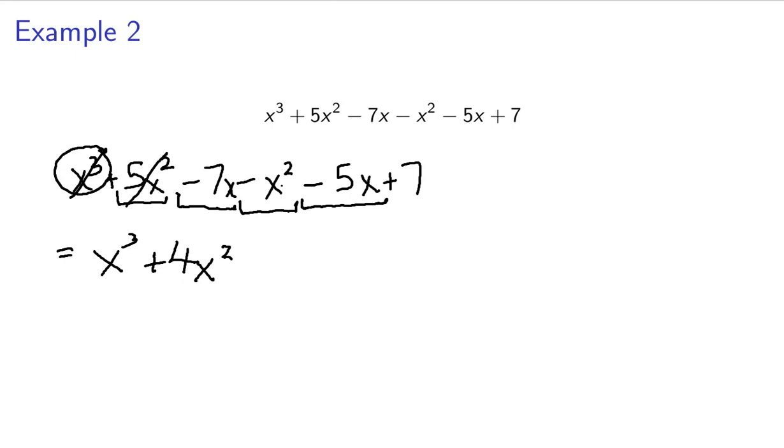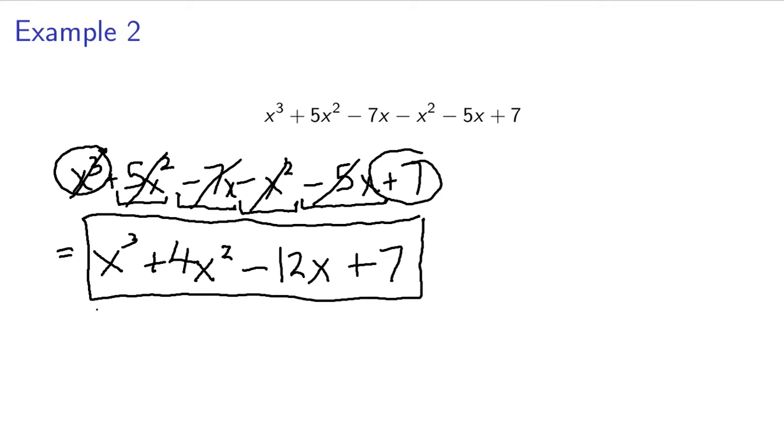And oh sorry I meant to cross these out because we're done with them. Negative 7x minus 5x, that's going to be minus 12x. So now I cross those out because I'm done with them. And there's nothing left except for this 7 right here, so plus 7.